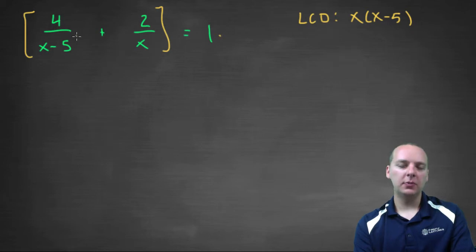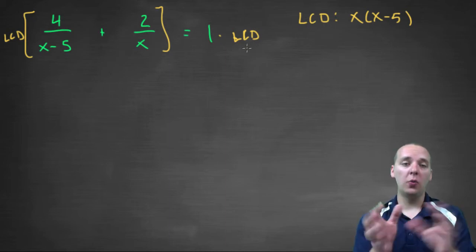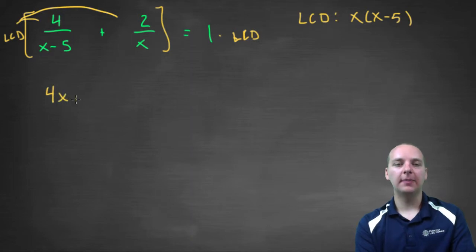Now I'm kind of crunched for space here, so I'm going to be a little lazy with my notation here. I'm just going to write LCD on the left and LCD multiplied on the right. You should probably write out the whole what the LCD actually is. I'm just a little crunched for space here. So we're going to distribute this guy on the left and multiply it on the right as well. Alright, on the left hand side, the first term the X minus five's cancel, so you just get four X.